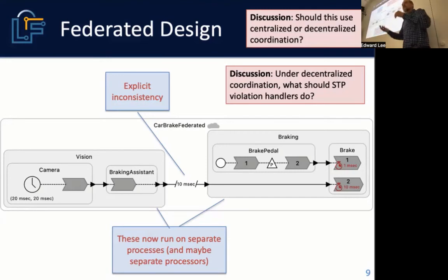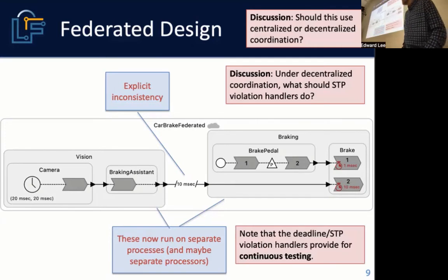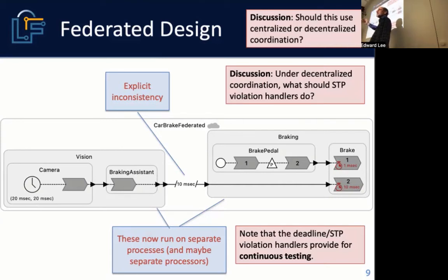That might be sufficient to satisfy your safety requirements. But there's a very interesting property about this: the system is continuously testing itself, because every 20 milliseconds you're checking your execution time and network latency. If your safe-to-process violation handler gets invoked, the test has failed — that's a nice feature in a runtime system.